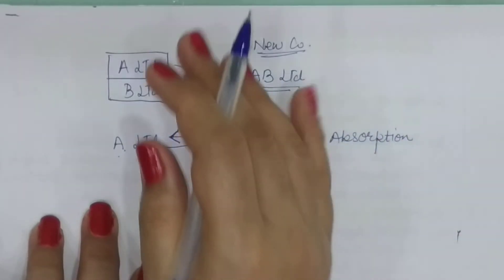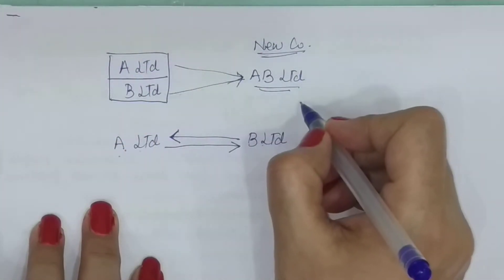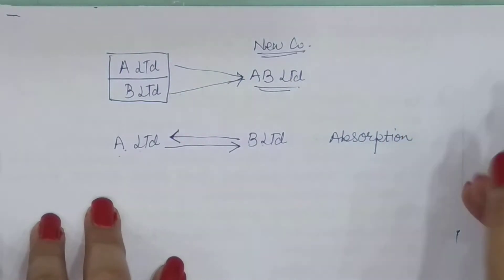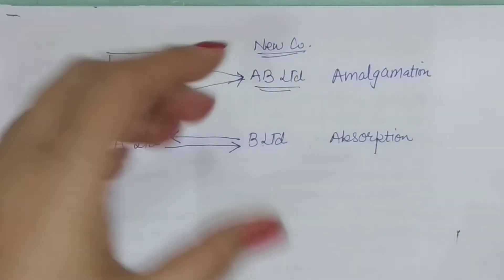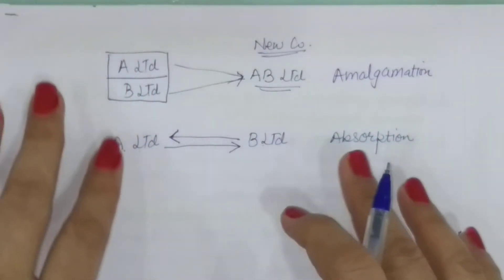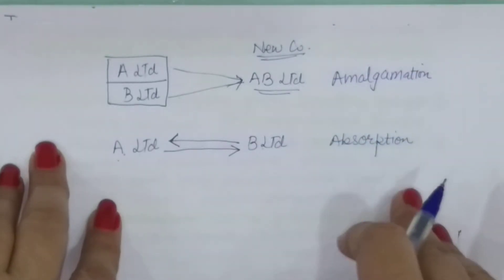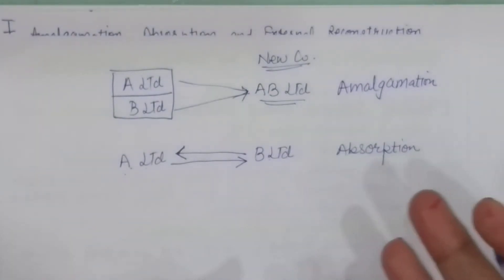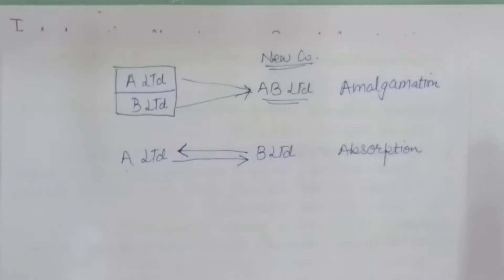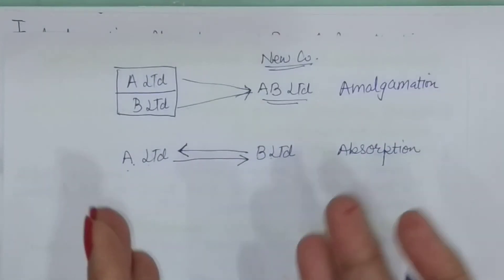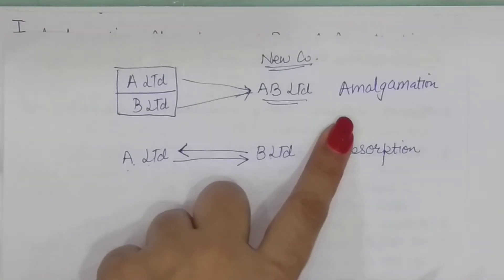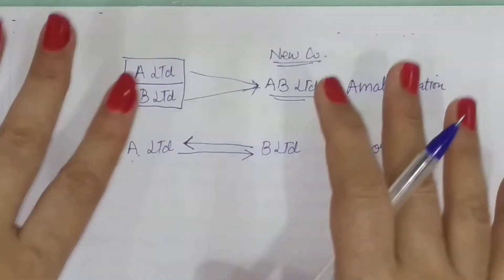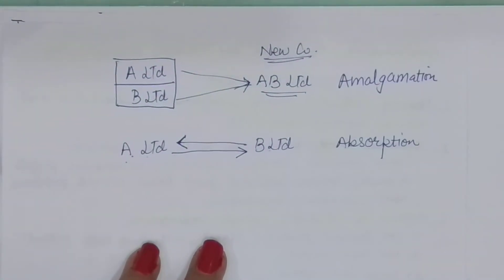The arrangement where all companies go into liquidation and a new company is formed to take over and work with the joint business is called amalgamation. The way companies combine their business gives two different terms: amalgamation and absorption — although there are other names like acquisition or merger. We use the term merger when two companies merge, and acquisition when one company buys another.